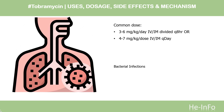Dosing for bacterial infections: 3–6 mg/kg/day IV/IM divided every 8 hours, or 4–7 mg/kg/dose IV/IM once daily.